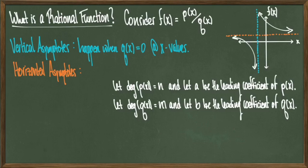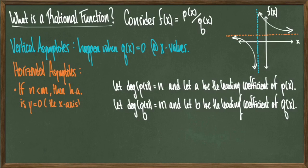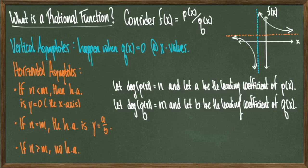Horizontal asymptotes have one of three outcomes. If n is less than m, then the horizontal asymptote is y equals zero, which is just the x-axis. If m and n are equal, then the horizontal asymptote is y equals a over b. And if n is greater than m, then there is no horizontal asymptote. So to recap: if the degree of the numerator is smaller than the degree of the denominator, the horizontal asymptote is the x-axis; if the degrees match, you get y equals a over b; and if the degree of the numerator is bigger, there is no horizontal asymptote.